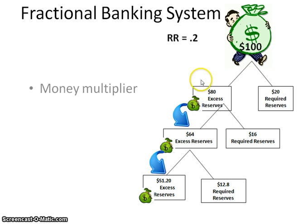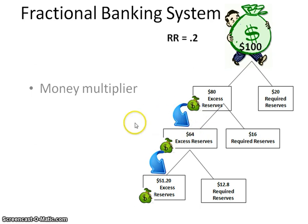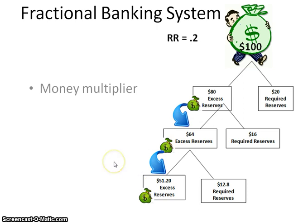That $80 then gets loaned out. When somebody takes that $80, they deposit it into another bank, and a certain percentage gets put in the excess reserves while the other 20% goes into the required reserves. When doing problems with the money multiplier, assume that all of the amount in the excess reserves gets loaned out — money is created through loans.